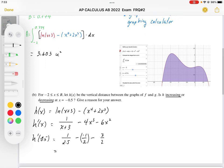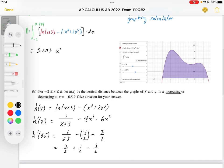So when we work this out, this ends up being 2 fifths plus 1 half minus 1 and a half. That gives me negative 3 fifths. So the H prime value is negative. That means it is decreasing.